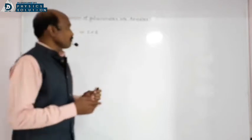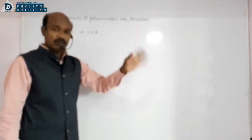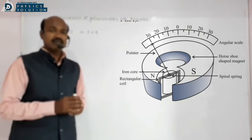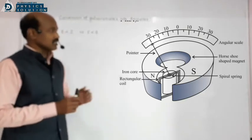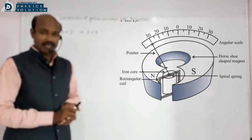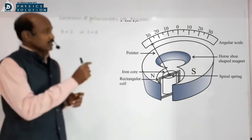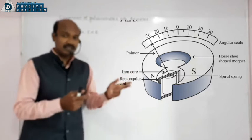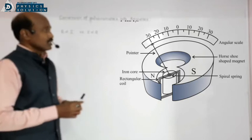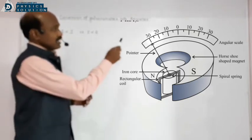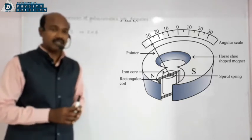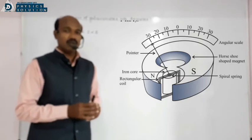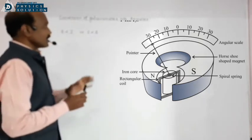Galvanometer is usually used as ammeter and voltmeter. Galvanometer is a coil pivoted between horseshoe magnets. When current passes through the galvanometer coil it gets deflected, and proportionally more current causes more deflection. The pointer deflects and the scale is calibrated to show that deflection. The pointer shows full scale deflection when maximum current passes through the galvanometer coil.